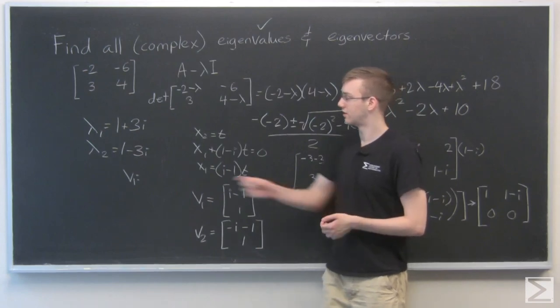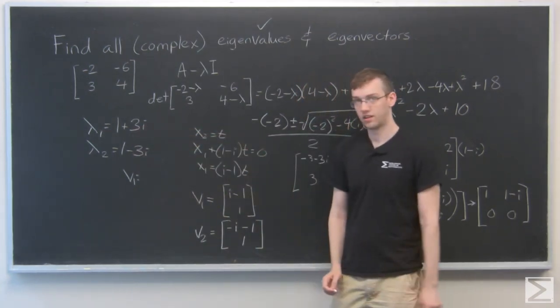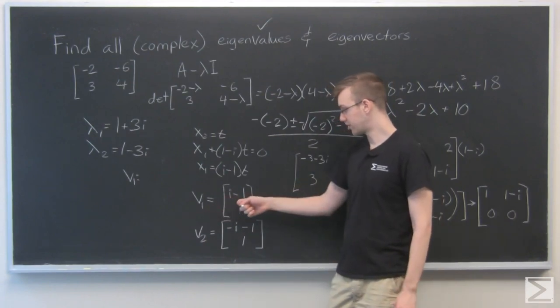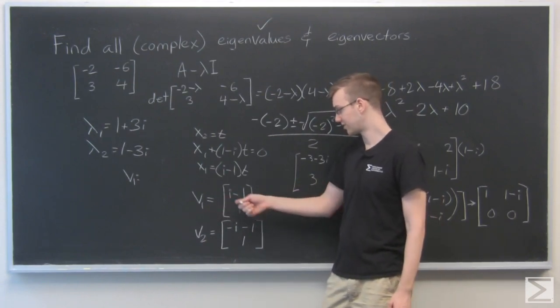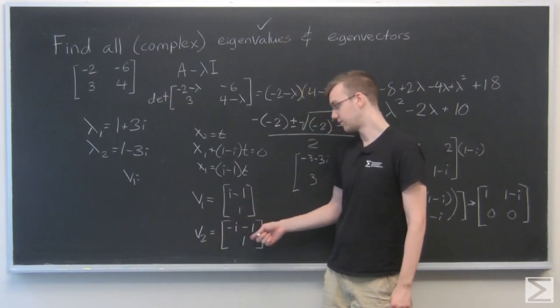So to reiterate, our eigenvalues are 1 plus or minus 3i. And the eigenvectors v1 is i minus 1, 1. And v2 is minus i minus 1, 1.